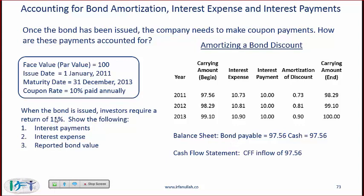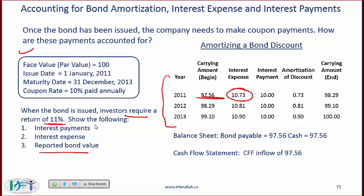This slide illustrates the process for a discount bond, and you need to be able to do the same for a par bond and a premium bond. We have the same bond from the previous slide; investors require a return of 11%, so this is a discount bond. The calculations show that 97.56 is the issue price — you discount all cash flows back at 11%. The interest expense is 11% — the effective interest rate — times the carrying amount at the start of the period.